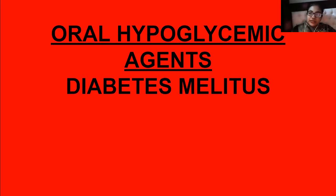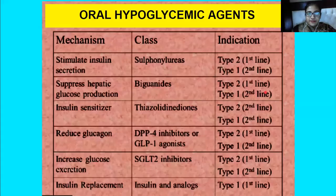All right, everybody, let's talk about the oral hypoglycemic agents which are used to treat diabetes mellitus type 2. In the last session, we discussed how to treat type 1 diabetes with insulin, and now we are talking about how to treat type 2 diabetes with the oral hypoglycemic agents.